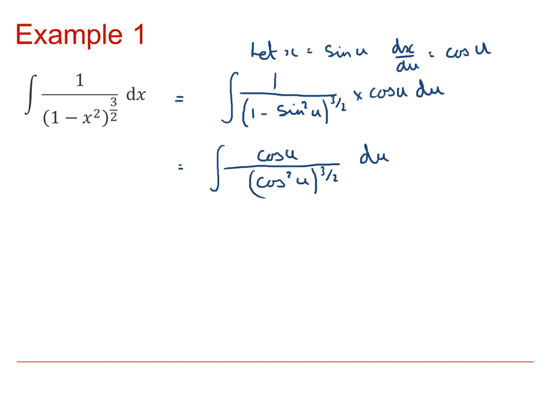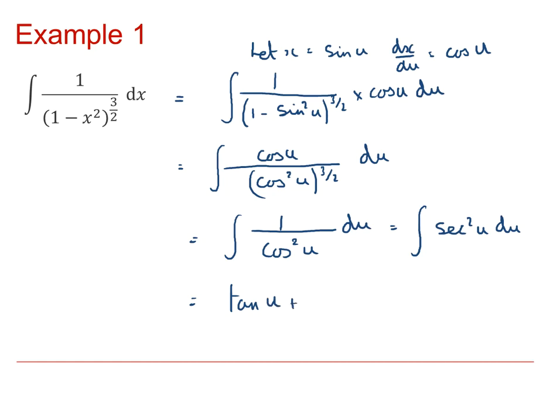In total then, that's cos(u) on the top and cos³(u) on the denominator, giving the integral of 1 over cos²(u), which is sec²(u). This is a standard integral, and the integral of sec²(u) is tan(u), so the solution is tan(u) plus c.